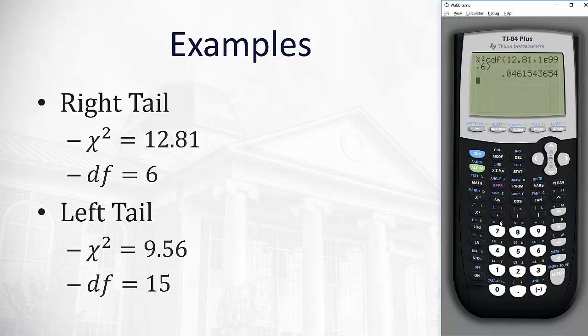Example 2: we will do a left-tailed test where χ² is calculated to be 9.56 with 15 degrees of freedom.